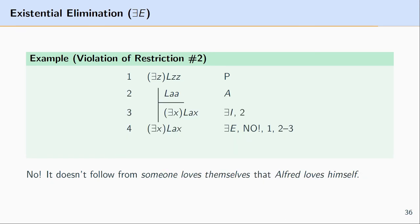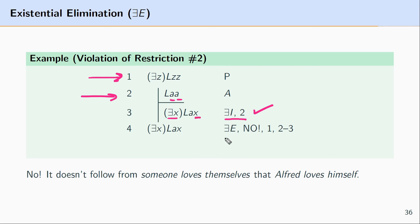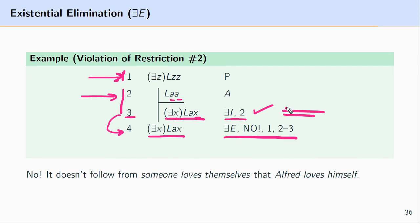Finally, let's look at the violation of the second restriction. At line 1 we have an existentially quantified expression. At line 2 we make an assumption based upon it, replacing the existentially quantified variables with A — this doesn't violate restriction 1 since A is not already found in an active part of the proof. At line 3, we use existential introduction, which is acceptable. The problem is at line 4: we take the formula derived in the sub-proof and pull it out, but we haven't ensured it doesn't contain any assumed names — so this violates the second restriction.